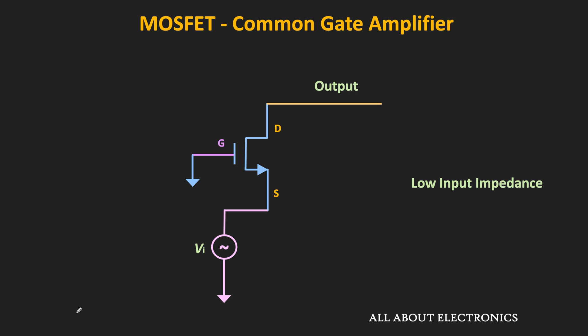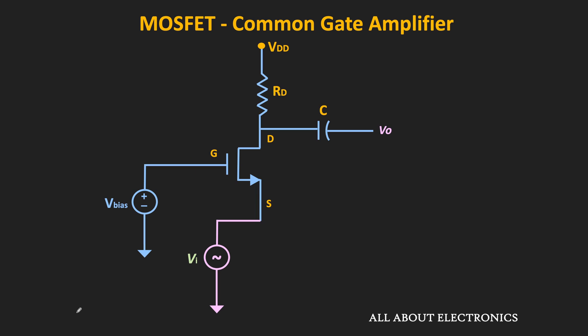Through small signal analysis, we will find expressions for the input impedance, output impedance, and voltage gain of this common gate amplifier. We will start with a very basic common gate amplifier circuit and gradually move to the actual circuit.